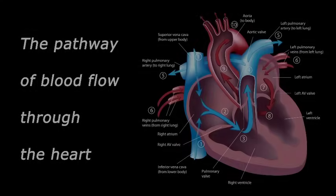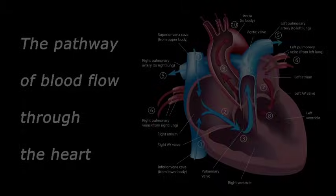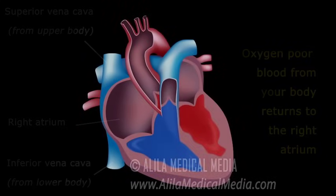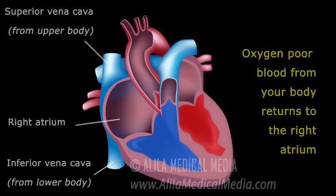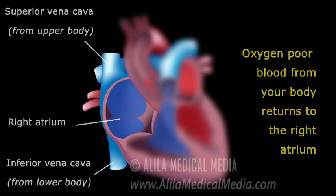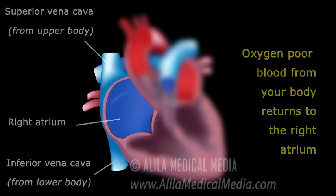The pathway of blood flows through the heart. Oxygen-poor blood from your body returns to the right atrium of the heart. Blood from your upper body returns through the superior vena cava, and blood from the lower body returns through the inferior vena cava.